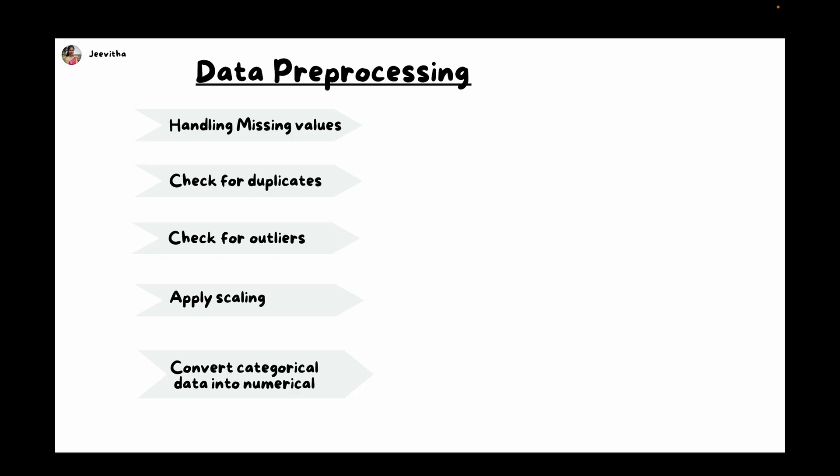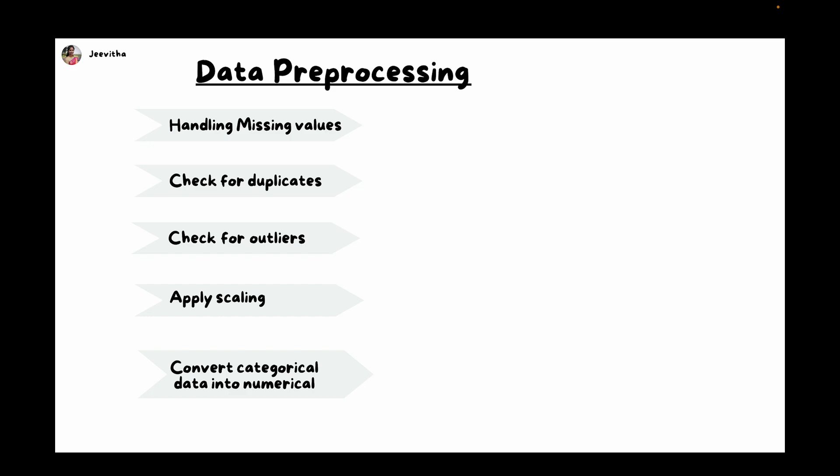The next important preprocessing method is converting categorical data into numerical. When data is text kind of data, before training your model, make sure you convert categorical data into numerical. Methods include label encoder, which encodes according to alphabetical order; one-hot encoder (also called dummies), which creates columns according to categories; manual encoder, where you encode manually based on priority with the target; and frequency encoder, which encodes based on frequency.